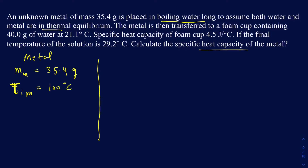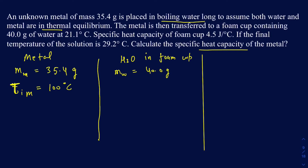It may not be exactly 100°C when you actually do the experiment, depending on outside pressure, but for this question assume the boiling temperature of the water is 100°C. The metal is then transferred to a foam cup containing water. We're given the mass of that water, which is 40.0 grams, and its initial temperature is 21.1 degrees Celsius.